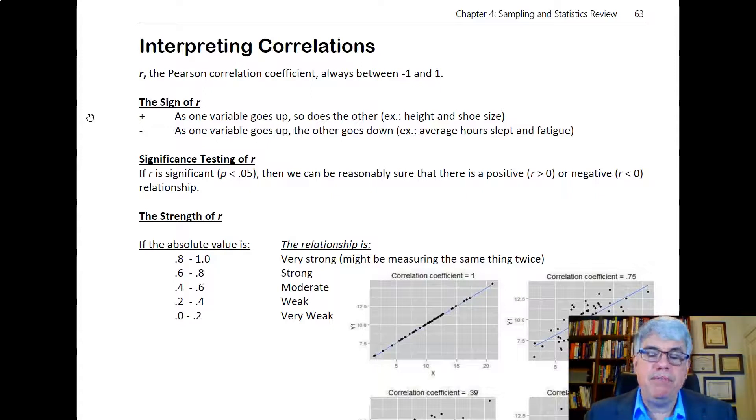So what does it mean on the practical level when we say that r is significant? It means that we can be reasonably sure that there is a positive or a negative relationship.